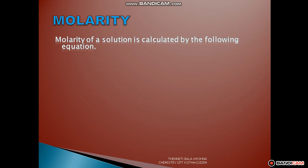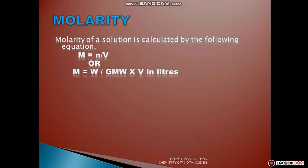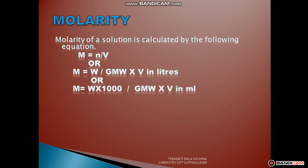Molarity of a solution is calculated by the following equations. We know the formula M is equal to N by V — number of moles of solute by volume of solution in litres. Here N is equal to W by gmw, that is weight by gram molecular weight, which we already learned in the mole chapter. So substituting, M is equal to W by gmw into 1 by V in litres. When volume is in millilitres, the formula converts to W into 1000 by gmw into V, where gmw means gram molecular weight, W is weight of the solute, and V is in millilitres.